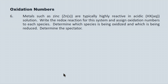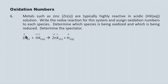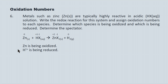Metals such as zinc are typically highly reactive in acidic solutions, shown here with HX as the general acidic formula. Write the redox reaction and assign oxidation numbers. Zinc is going from zero to plus two — it's becoming more positive, losing electrons, and being oxidized. Hydrogen is going from plus one in the acid to zero in the neutral diatomic molecule — it's becoming more negative and being reduced. That makes zinc the reducing agent and hydrogen the oxidizing agent. The spectator ion is X 1−, whose oxidation state doesn't change from reactants to products.